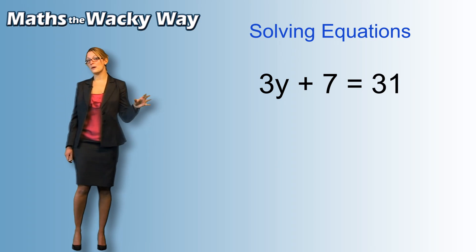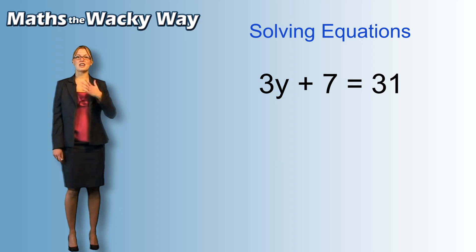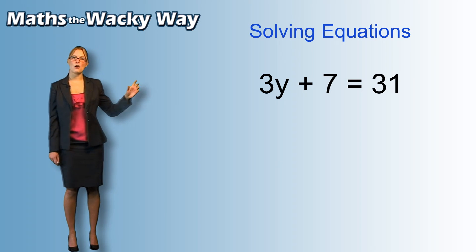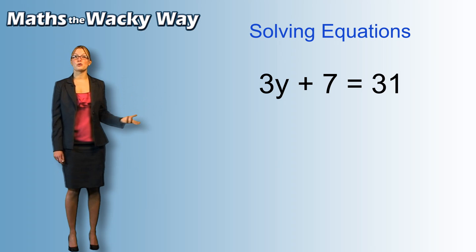So what we're going to do with our equation, we're going to treat the character, the one that we care about, that we're controlling, is going to be our y in the example 3y plus 7 equals 31.